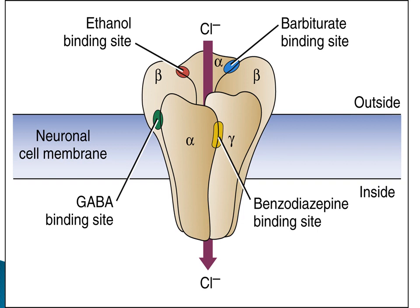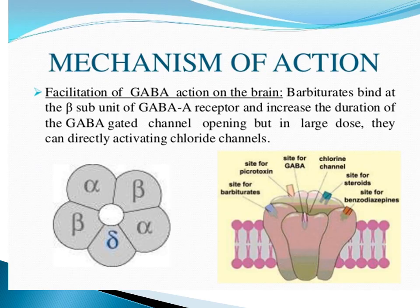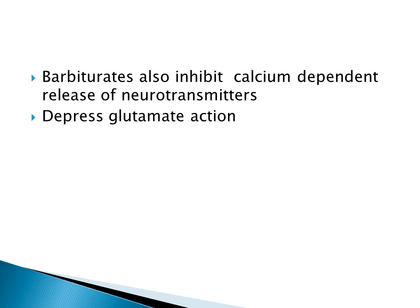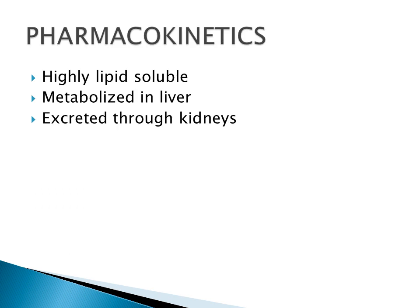The mechanism of action of barbiturates differs from benzodiazepines: benzodiazepines increase the frequency of chloride channel opening, while barbiturates increase the duration of chloride channel opening at the GABA-A receptor. This is the main difference between the two. Because of this prolonged channel opening, barbiturates can depress the CNS to a great extent. They are highly lipid soluble and metabolized in the liver.